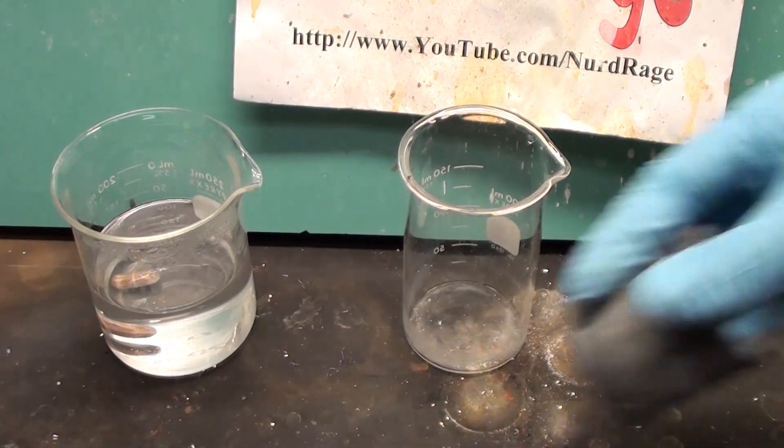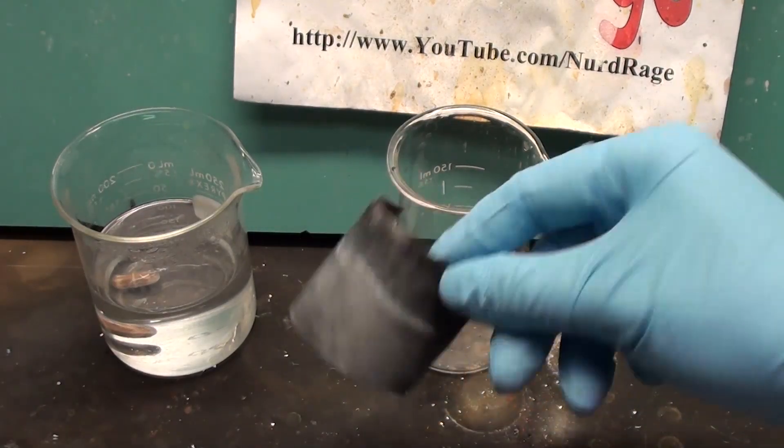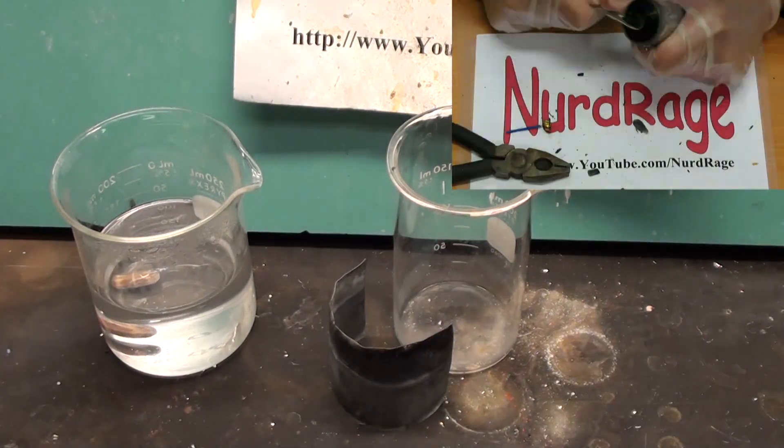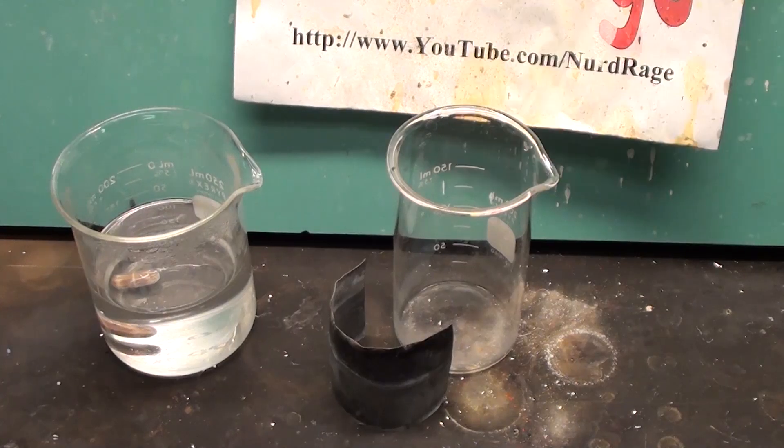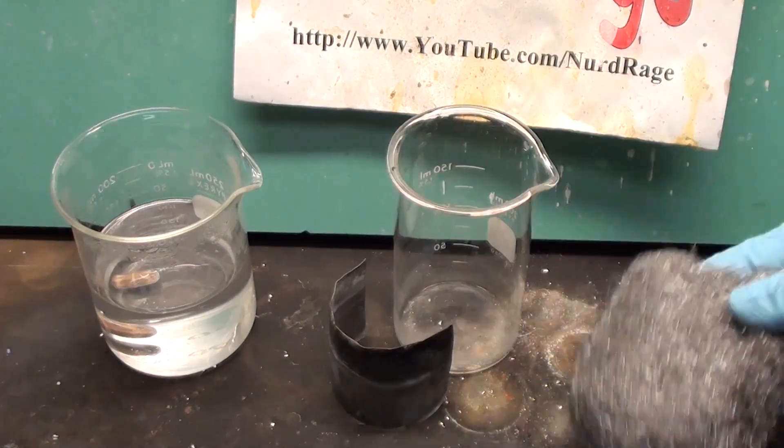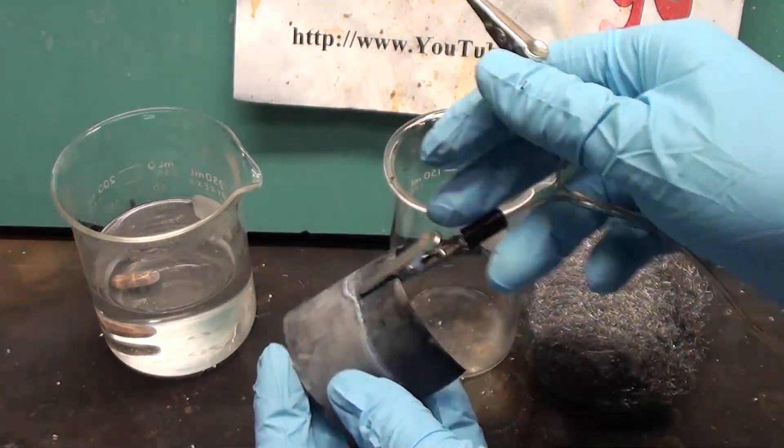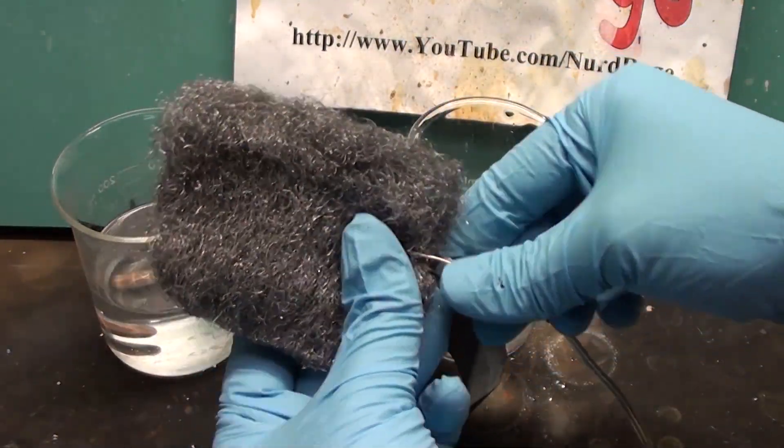For our anode or negative electrode, we use a large sheet of zinc metal. We originally got this out of a carbon zinc battery from a previous video. For the cathode or positive electrode, we'll again be using steel wool. Now get some wires or alligator clips and attach them to the electrode materials.